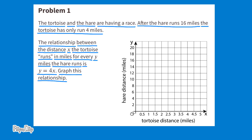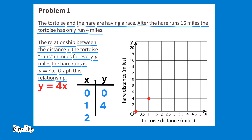First, I'll make a table to get some coordinates. The x value will be on the left side of the table and the y value will be on the right side. Remember, all the y values will be four times greater than x. Four times zero is zero, four times one is four, four times two is eight. I plotted each of these sets of coordinates and they all fall on this line. The horizontal axis (x-axis) represents the distance the tortoise runs in miles, and the vertical axis (y-axis) represents the distance the hare runs in miles.